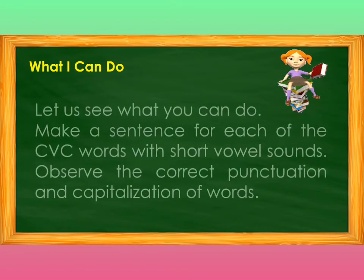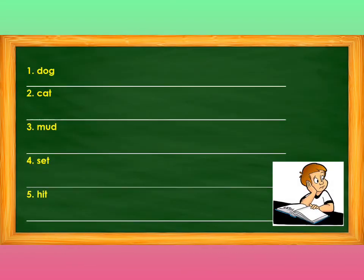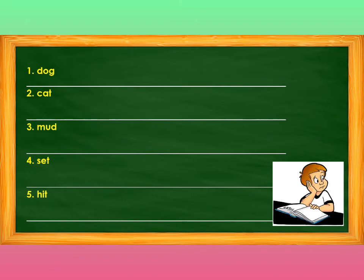What I Can Do. Let us see what you can do. Make a sentence for each of the CVC words with short vowel sounds. Observe the correct punctuation and capitalization of words. Do it now. Number 1: dog — try to use the word dog in the sentence. Number 2: cat — try to use the word cat in the sentence. Number 3: mud — use the word mud in the sentence. Number 4: set — use the word set in the sentence. Number 5: heat — try to use the word heat in the sentence.